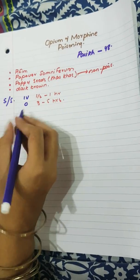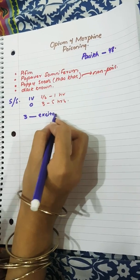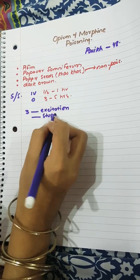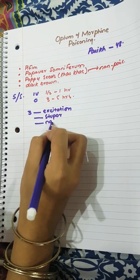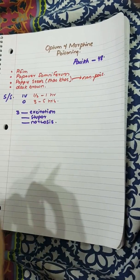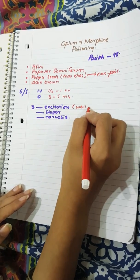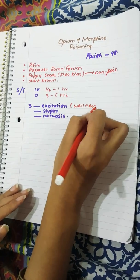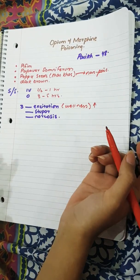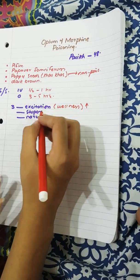There are three stages: excitation, stupor, and narcosis. So continuing, excitation stage is characterized by a feeling of wellness or well-being. Everything is excited or upregulated in here. For example, there will be laughter, hallucinations, and rapid heart rate.